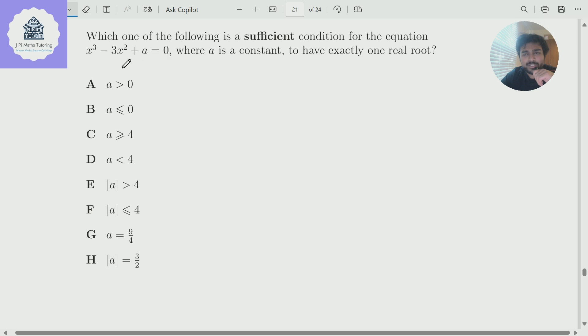So we have this cubic equation here, a is a constant, and we want it to have one real root. Which of these conditions here is a sufficient condition for this to have one real root?